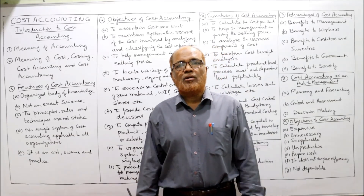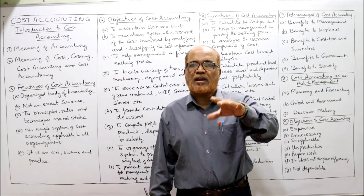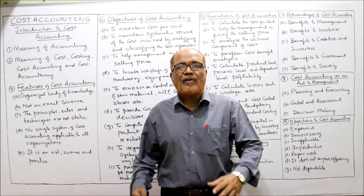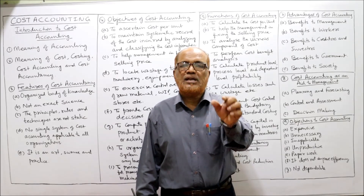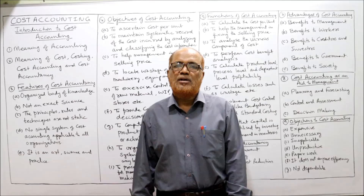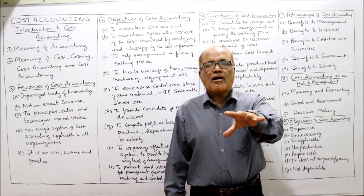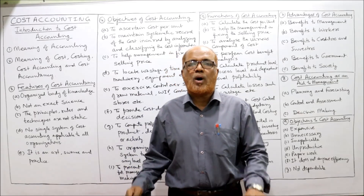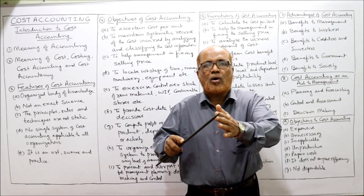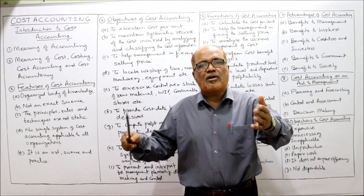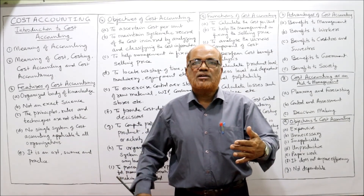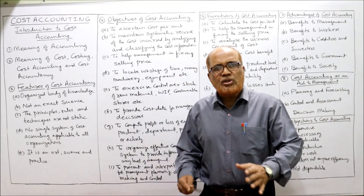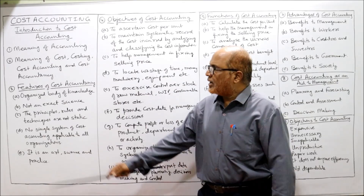So different new branches of accounting have been developed. Cost accounting is that branch concerned with recording and classifying costs in order to ascertain cost, control cost, and find the profitability of the organization. Management accounting is that branch concerned with supplying the necessary information to management as and when required — it considers financial accounting and cost accounting, collects and processes data, and makes it useful for management decision-making.